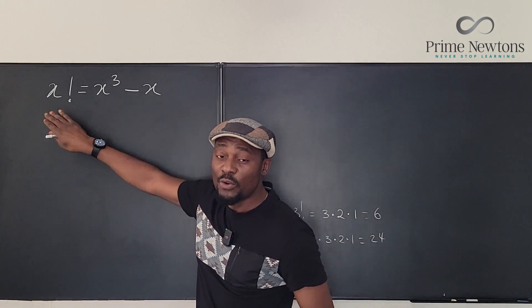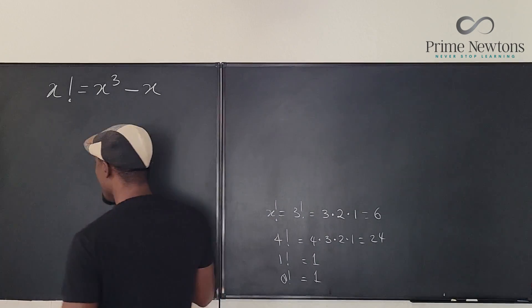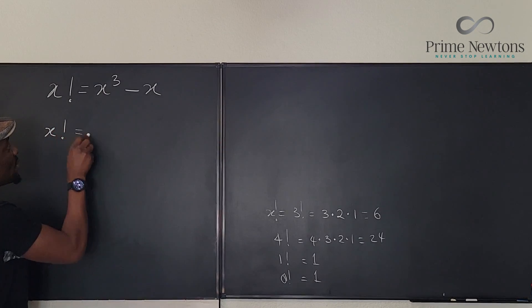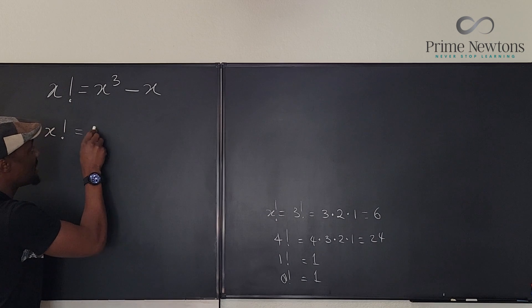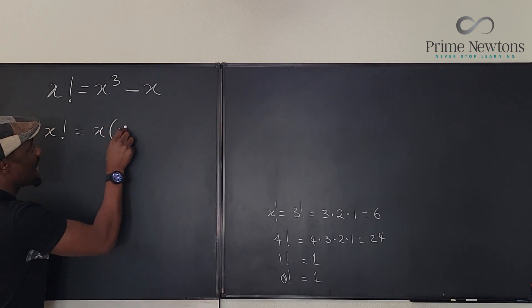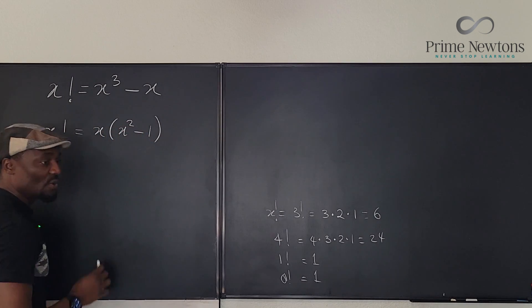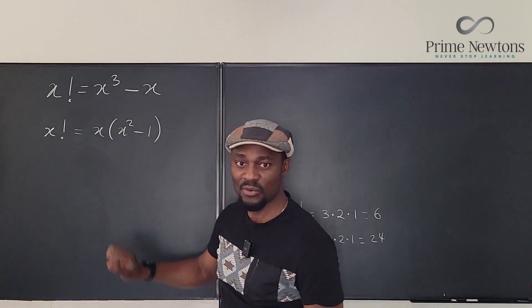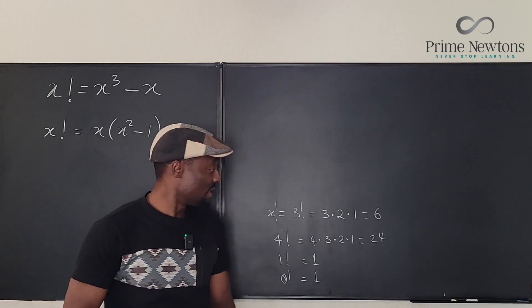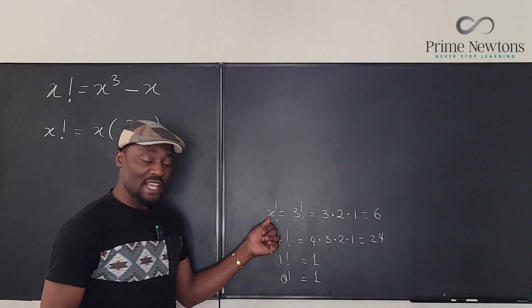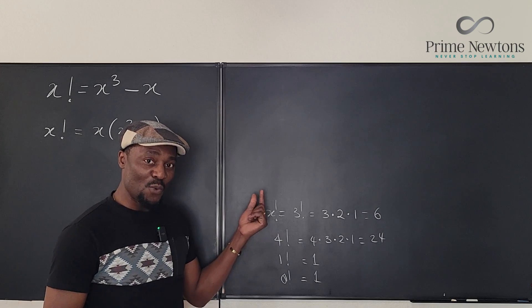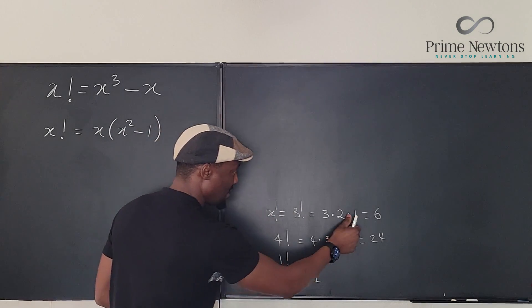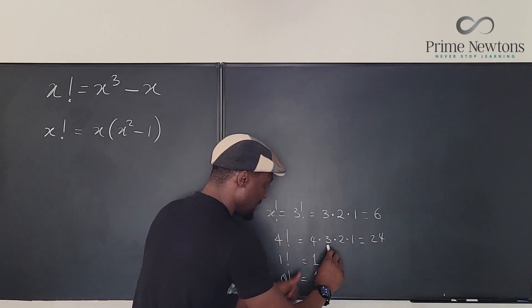x factorial, we don't know what x factorial looks like. So we can just look at the right hand side. x factorial will be equal to, if I factor out x from here, it's going to be x times x squared minus 1. So what I can do is try to make the left hand side look a little like the right hand side. And by using the factorial definition, you start with x, you multiply it by 1 less than x factorial.